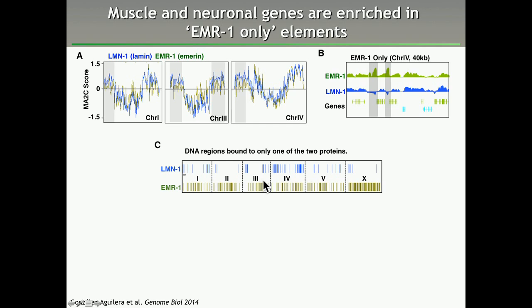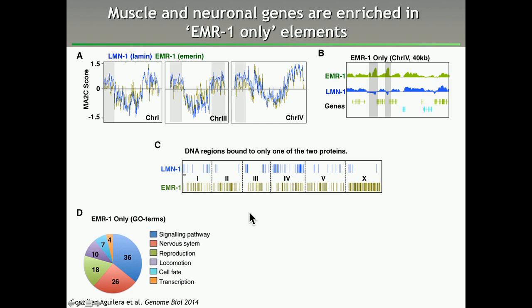GO-term analysis of those Emerin-only elements finds a high number of genes related to the nervous system in C. elegans.